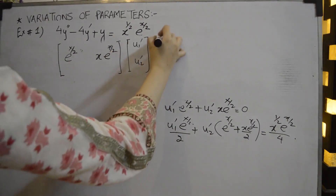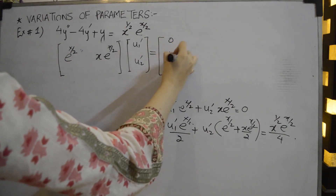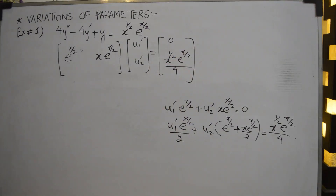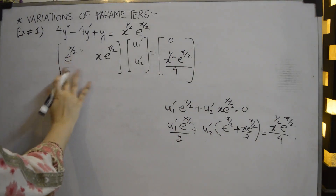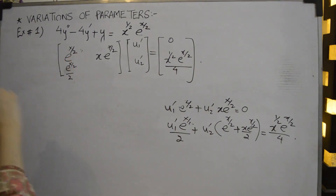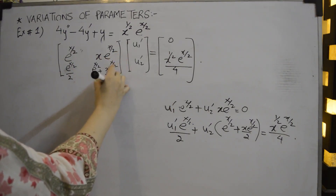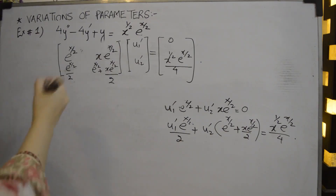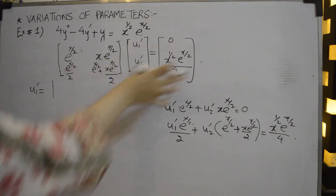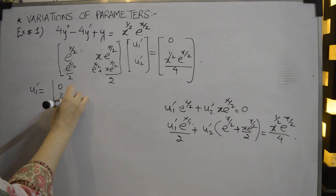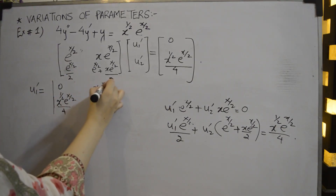The first equation equals 0 and the second equals x^(1/2)*e^(x/2)/4. Using Cramer's rule, u1' is determined by replacing the first column with [0, x^(1/2)*e^(x/2)/4] and keeping y2 = x*e^(x/2) and y2' = e^(x/2) + (x/2)*e^(x/2) in the second column.